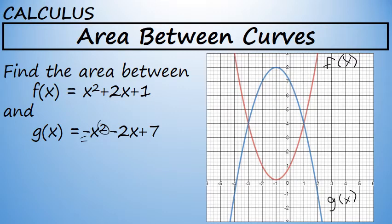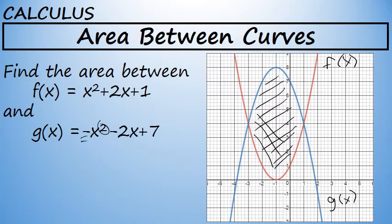When we look at both parabolas on the same coordinate plane, we can see there's a region enclosed by the two curves, and it is the area of this region that we're going to find. We'll be using integration to find the area between these two curves, so I'll begin by setting up an integral.